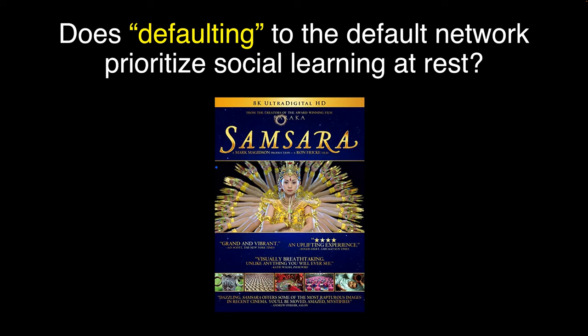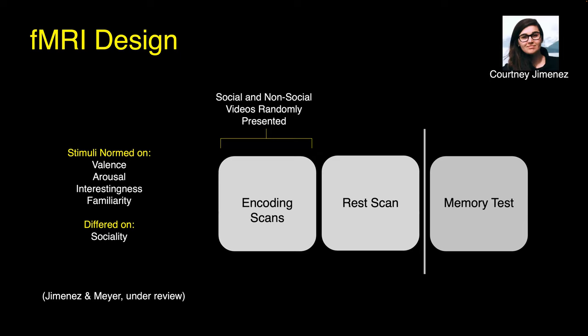We had participants observe Samsara in the scanner. This work was spearheaded by Courtney Jimenez, a graduate student in my lab. We didn't have participants watch the whole documentary — it's more than two and a half hours. Instead, Courtney had an online set of participants watch every clip from the movie and rate it along a number of dimensions: valence, arousal, interestingness, familiarity, and sociality — the extent to which they have to do with people. She then grabbed a subset of clips normed on these dimensions that are often conflated with sociality, but that significantly varied on the social dimension. Participants watched these video clips during encoding in a fully randomized order, did a resting state scan, and then a surprise recognition memory test.